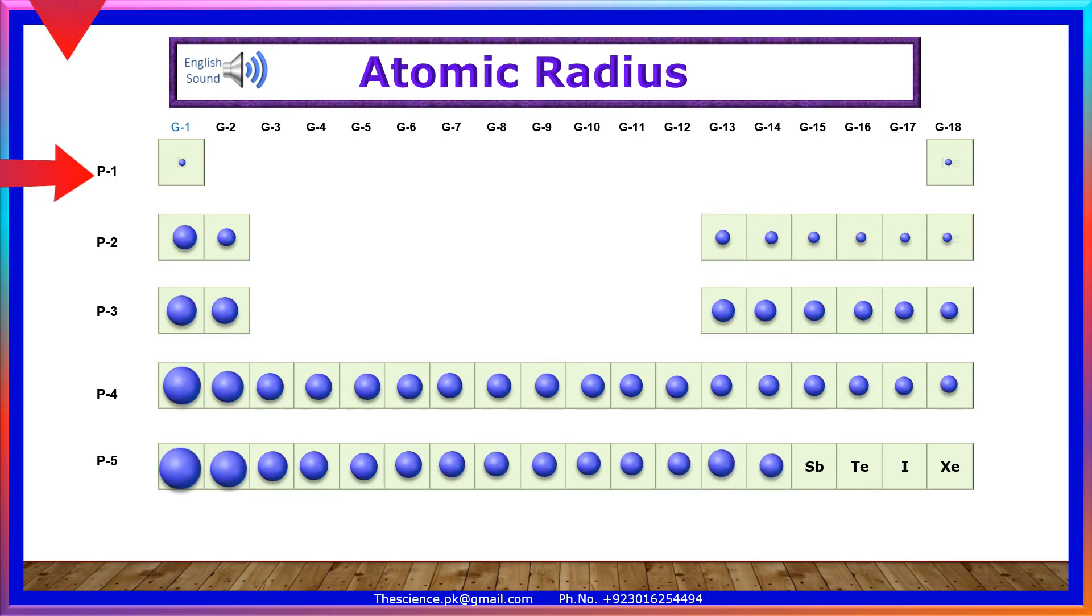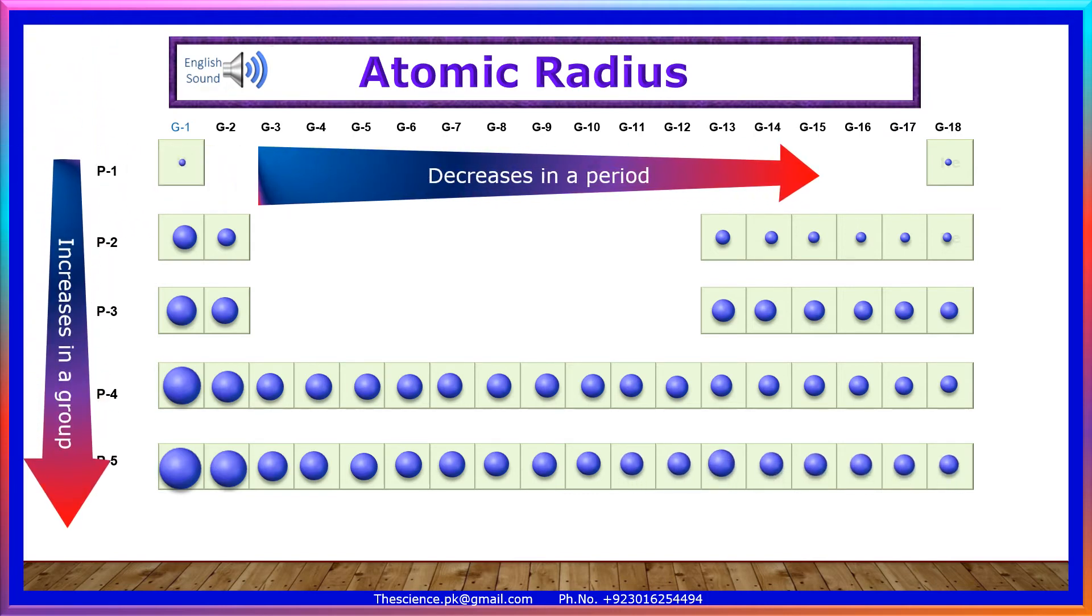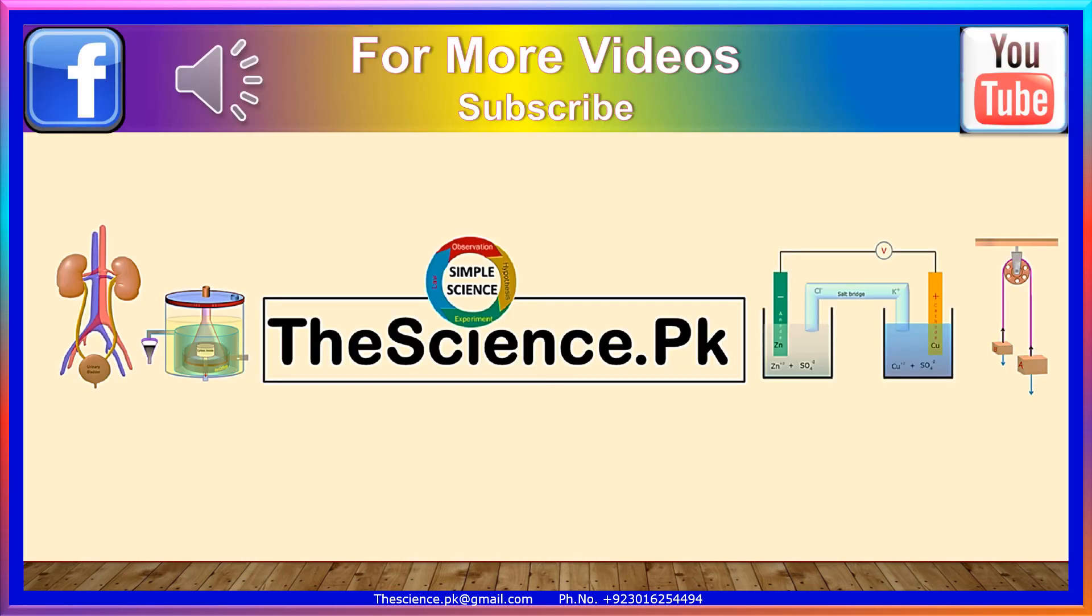Atomic radius decreases in a period and atomic radius increases in a group. For more videos, visit YouTube channel TheScienceDotPK.